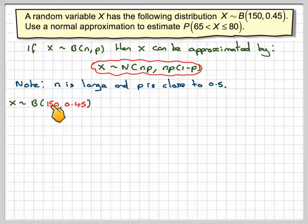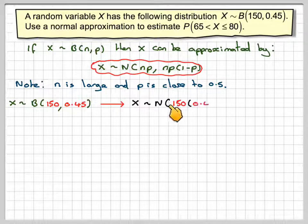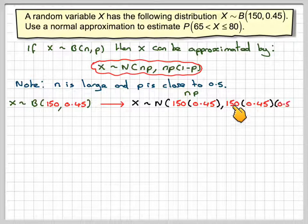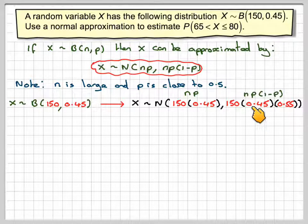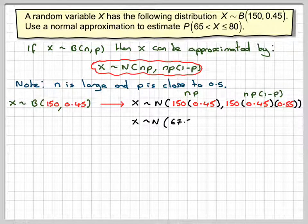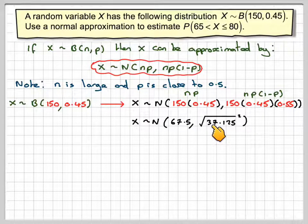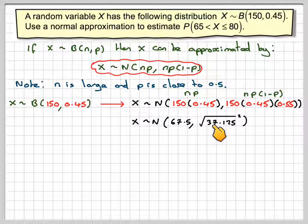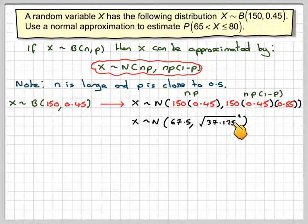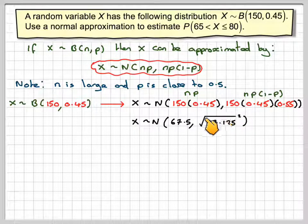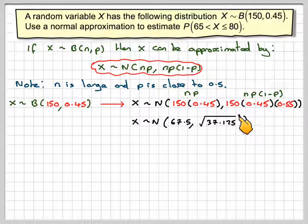So X is binomially distributed B(150, 0.45). Setting up the parameters of the normal distribution, the mean will be 150 times 0.45 (n times p), and the variance will be 150 times 0.45 times (1 minus p), which is 0.55. So X will be normally distributed with mean 67.5. You're strongly recommended to write the variance as the square root of 37.125 squared, because you're going to have to standardize using the normal variable, so you'll need the standard deviation and not the variance.